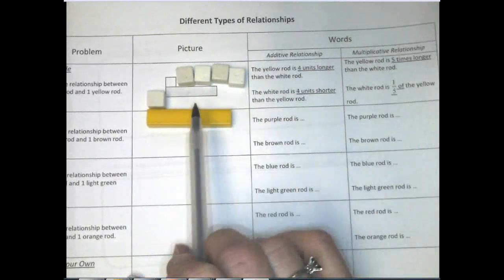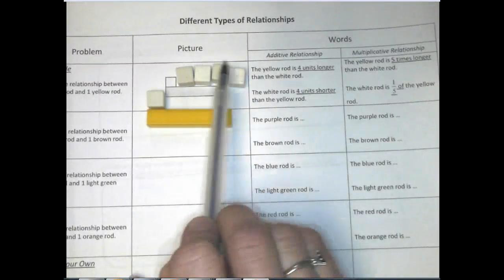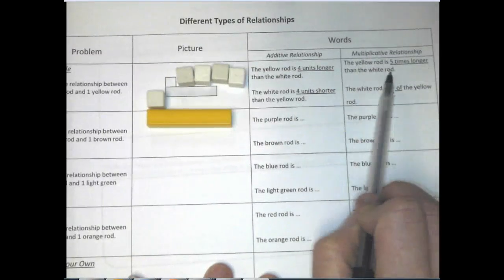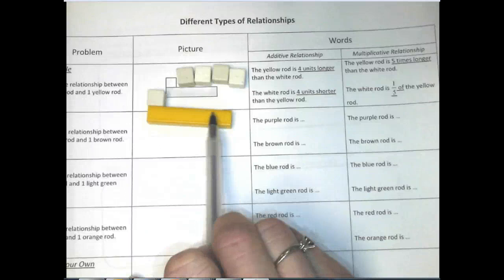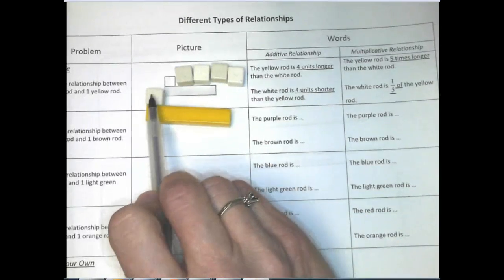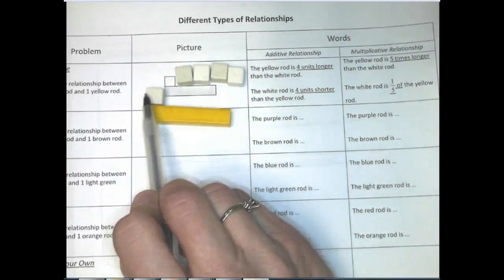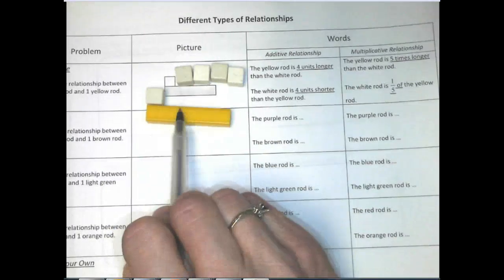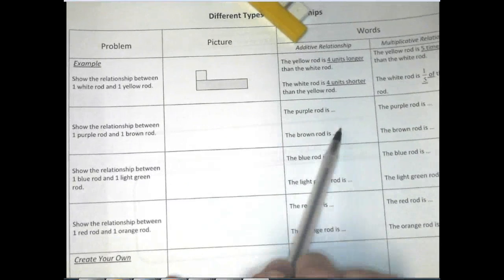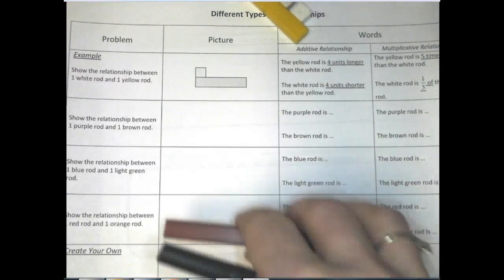Multiplicative is talking about how many whites it takes to make up a yellow. If I have one group of white, how many does it take to make up a yellow? The yellow rod is five times longer than the white because it would take five of those to make up the yellow. We can say five times as long. We can also compare the white to yellow and say that the white is one-fifth of the yellow because it takes five whites to make up yellow. We went through the rest of them, and I'm going to do the purple and brown together with you, then show you the other relationships so you can work through them and check your answers.